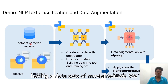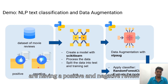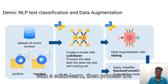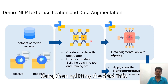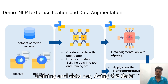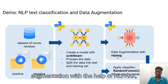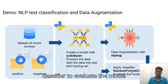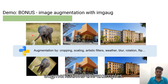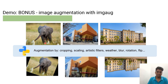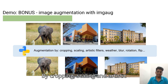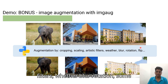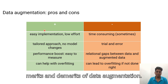Here is an example using a dataset of movie reviews with positive and negative labels. Data augmentation is done by creating a model with scikit-learn, processing the data, splitting it into training and test sets, performing data augmentation with the help of nlpaug, and then applying a Random Forest classifier to evaluate the model. Augmentation examples include cropping, scaling, artistic filters, weather effects, blur, and rotation.